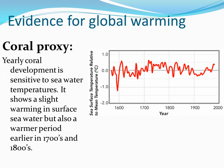The coral proxy. Corals incorporate isotopes into their skeletons, and these coral records can be a proxy for atmospheric temperature. This shows a slight warming in surface seawater, but also a warmer period earlier in the 1700s and 1800s.